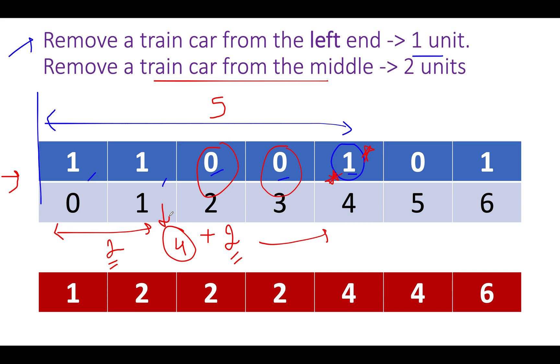If you've understood these two constraints you've understood the entire logic. Let's extend this to the entire array.